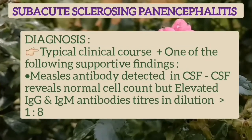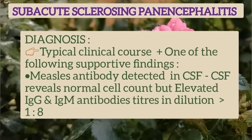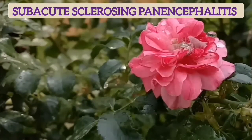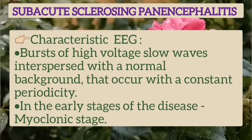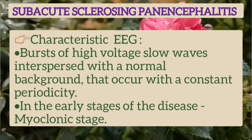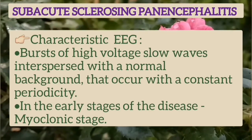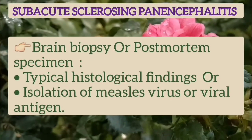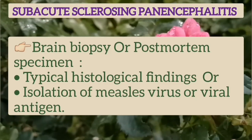Diagnosis of SSPE requires the typical clinical course plus one of the following supportive findings: First, measles antibody detected in cerebrospinal fluid — IgG or IgM antibody titer in dilution greater than 1:8. Second, characteristic EEG finding showing bursts of high-voltage slow waves interspersed with a normal background occurring with constant periodicity, present especially in the myoclonic stage. Third, brain biopsy or postmortem specimen showing typical histological findings, or isolation of measles virus or viral antigens.